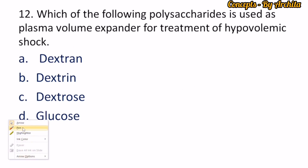Question 12: Which of the following polysaccharides is used as a plasma volume expander for treatment of hypovolemic shock? The options are dextrin, dextrose, and glucose. Dextrin is the partially digested starch, and dextrose is the solution of glucose. Dextrin is used as a plasma volume expander for treatment of hypovolemic shock. So option A is correct.